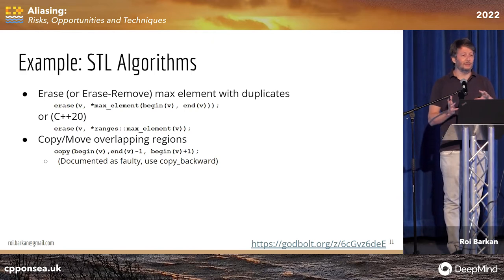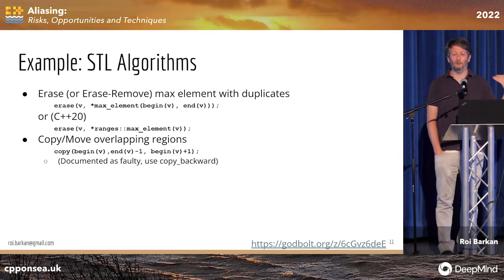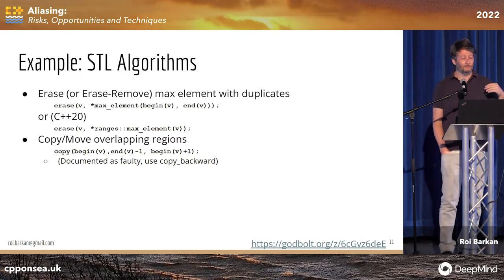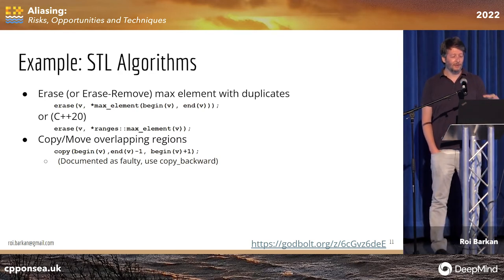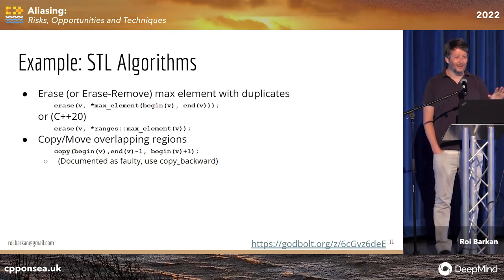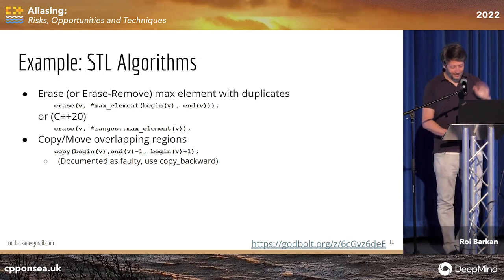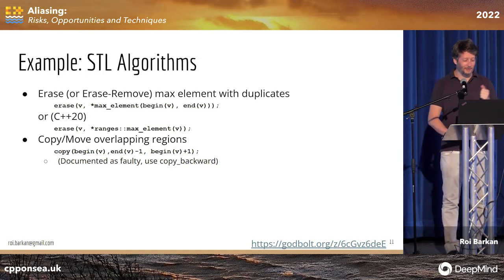By the way, in C you have memcpy and memmove, where memmove is the specific function meant for overlapping buffers. In the STL you have std::copy and std::move, but std::move is totally unrelated to memmove — it has to do with move semantics.